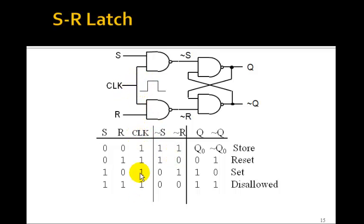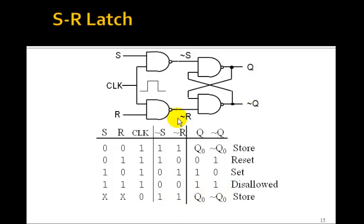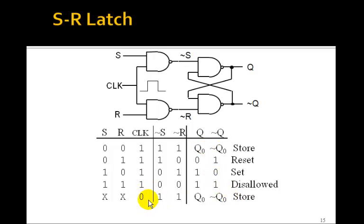We can produce a store state by simply bringing the clock low. But we still have this disallowed state, and the source of it is that we've allowed S and R to be the same. If S and R are both 1, we have the disallowed state. If they're both 0, we have the store state, but we can also get the store state by bringing the clock low. So let's see how we can get rid of the case where S and R are the same.